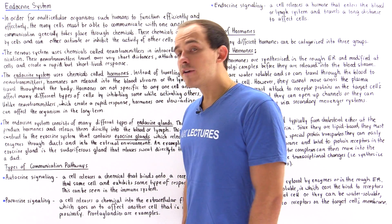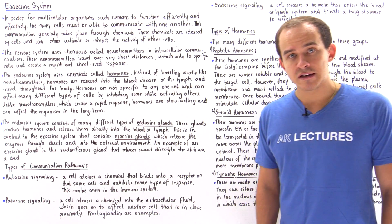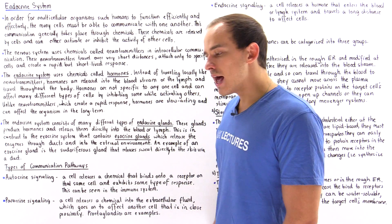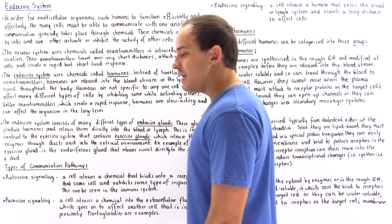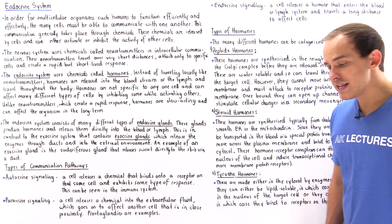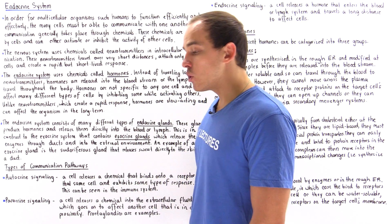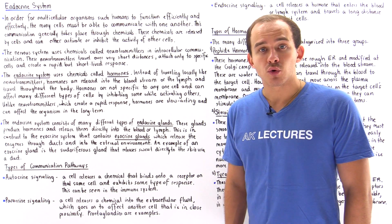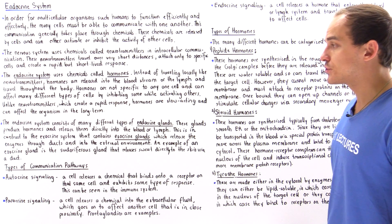Neurotransmitters are very specific to the type of cell that they bind to, but hormones are not that specific — they can bind to many different types of cells. Some of these cells can be affected in an activating manner, while other cells can be inhibited by that same hormone. Unlike neurotransmitters, which act over very short distances, act very quickly, and are short-lived, hormones travel over very long distances, act relatively slowly over hours, days, or even longer, and can affect the organism over the long term.